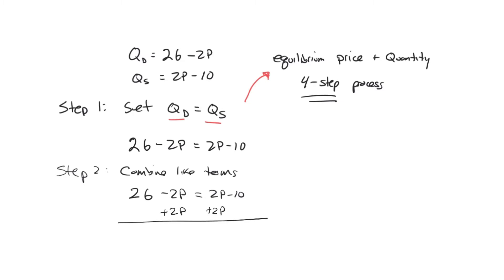I want to add 2P to both sides. If I do that, these P's over here on the left are going to cancel. I'm left with just 26 on the left hand side. I have 2P minus 10 plus 2P. That means we've got 4P minus 10 on the right hand side. Now we still need to make sure that we combine our constants. So let's go ahead and add 10 to both sides.